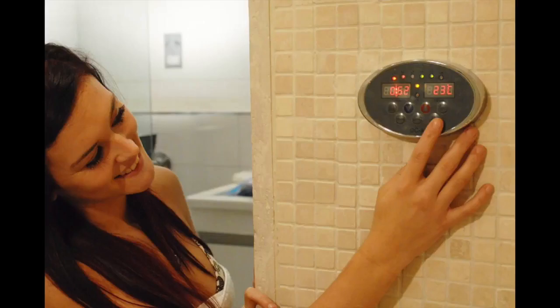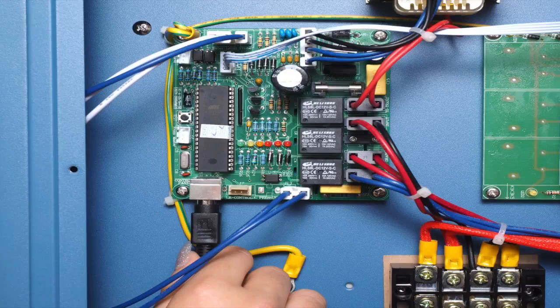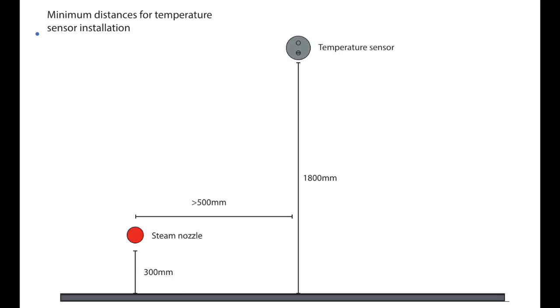The keypad can be installed inside or outside of the room. The connection lead is 5 meters long and plugs into the circuit board as shown in the image. The temperature sensor plugs into the keypad and has a 4 meter lead. This should be positioned at 1800 millimeters from the floor and as far from the steam nozzle as possible.